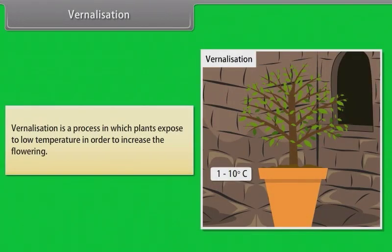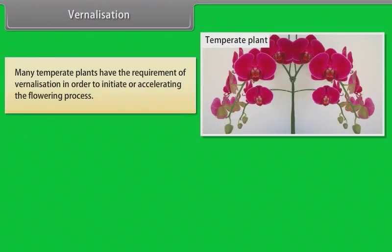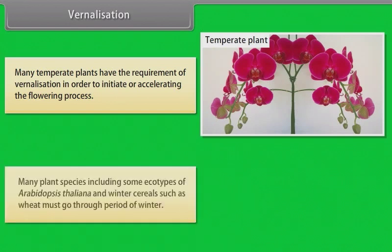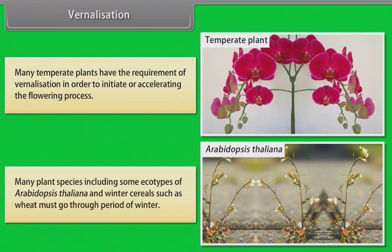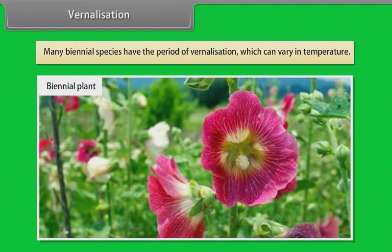Vernalization. Vernalization is a process in which plants are exposed to low temperature in order to increase the flowering. Many temperate plants have the requirement of vernalization in order to initiate or accelerate the flowering process. Many plant species include some ecotypes of Arabidopsis thaliana and winter cereals such as wheat must go through a period of winter. Many biennial species have the period of vernalization which can vary in temperature.